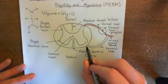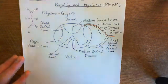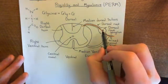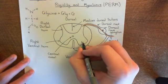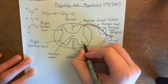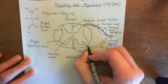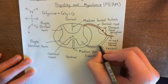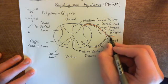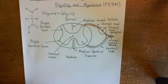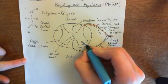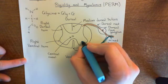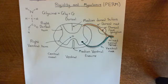The ventral root contains the alpha motor neurons going out of the spinal cord. Motor neurons have their cell bodies in the ventral horn, and send their axons out through the ventral root. These axons then join with the sensory afferent axons in the mixed spinal nerve — that's why it's called a mixed spinal nerve, because it contains both motor fibres and sensory fibres. The motor fibre is highlighted here in blue, with its cell body in the ventral horn.